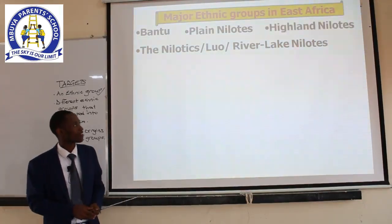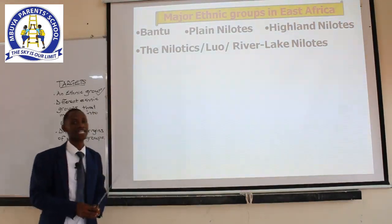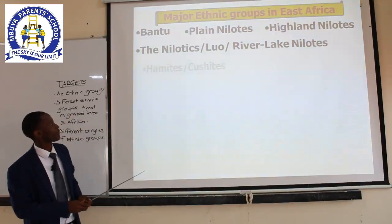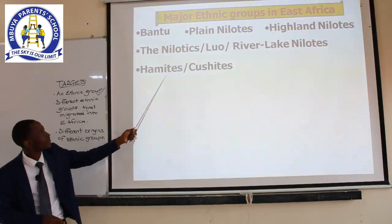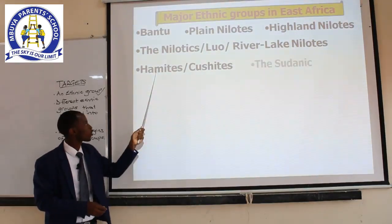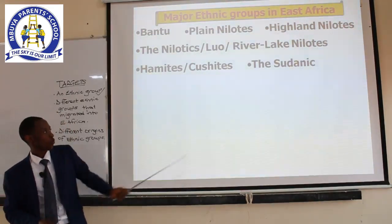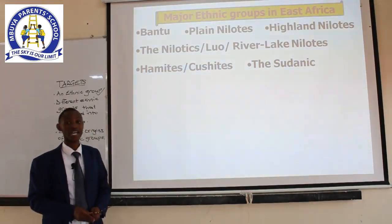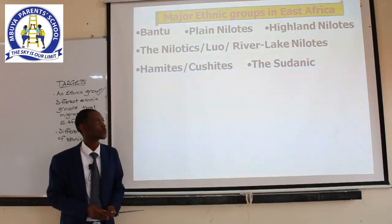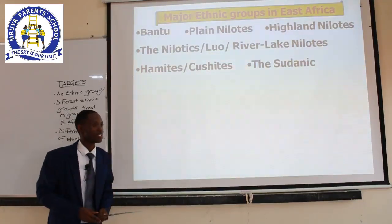Number four: we have the Highland Nilotics — they get their name from the area where they settled. As you hear the word highland, they settled in highland areas. Number five: we have the Hamites, also known as Cushites. We are going to look at where they migrated from and where they are currently settled in East Africa. We also have the last ethnic group, the Sudanic people. As the word suggests, they migrated from Sudan. Those are the Sudanic people — we are going to look at where they are currently settled in Uganda and East Africa.